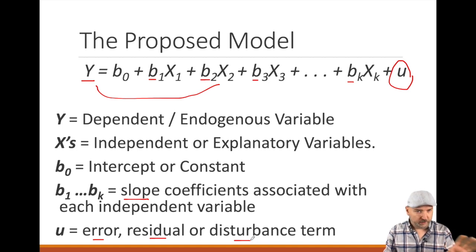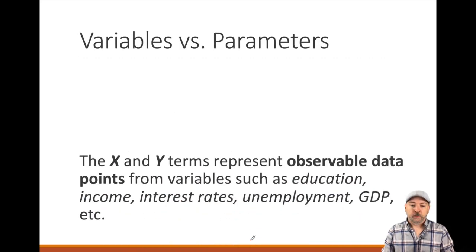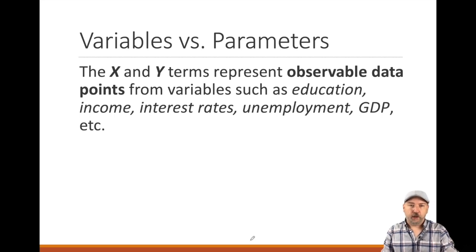And then the hero of our story eventually is going to be this error term, also known as the residual, also known as the disturbance term. We didn't really have that in the initial formulation. All we're doing there is recognizing that even if we know everything else, there's always going to be this portion of y that varies randomly, that we're not going to be able to predict perfectly.